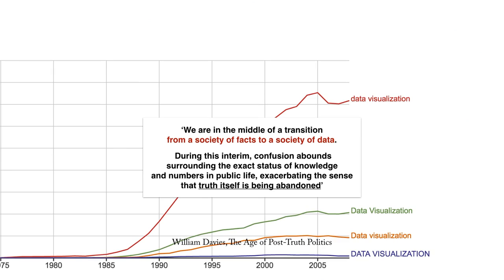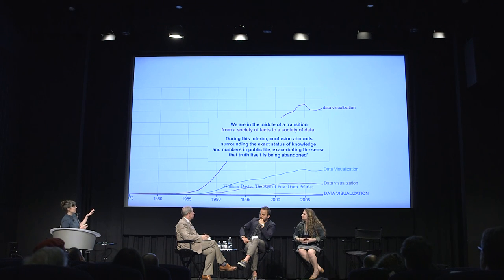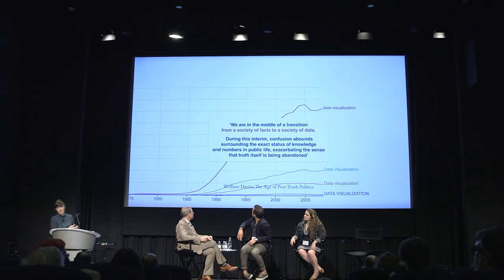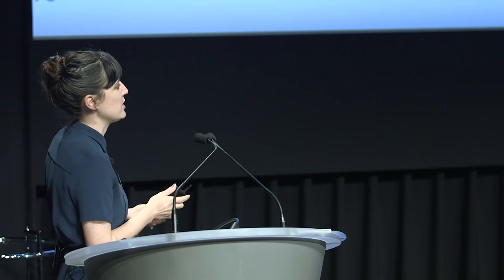As William Davis very well said, we are now moving from a society of fact to a society of data. This article is called The Age of Post-Truth Politics — you can understand the context. There is a conversation around the feeling that truth has been abandoned, and we can now claim fact without being factual. So the question is: what is data visualization's role in this, and what types of questions should we ask ourselves?